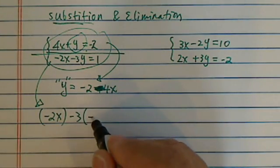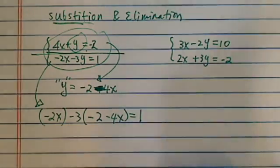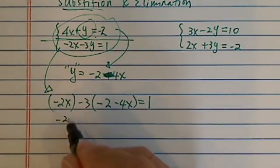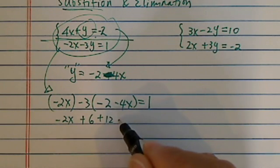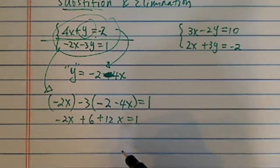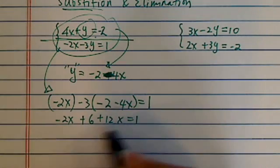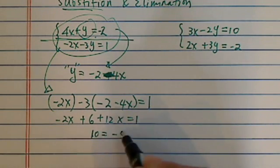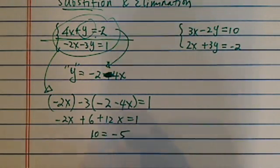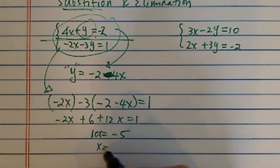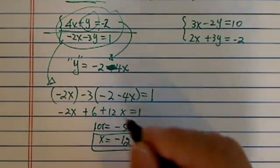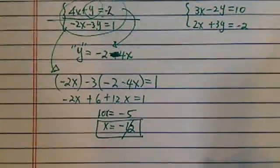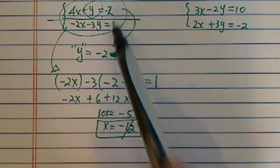Minus 3 times y — what's y? It's minus 2 minus 4x — equal to 1. From here, this should be pretty easy. All you have is one variable, one equation. So I have 10x equal to minus 5. I subtract 6 on both sides, and x is equal to minus one-half.